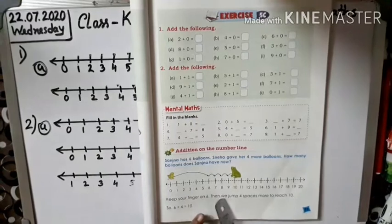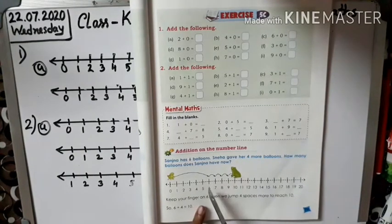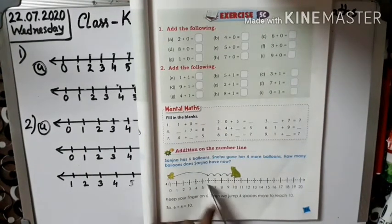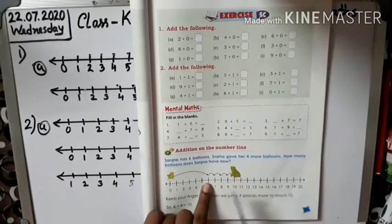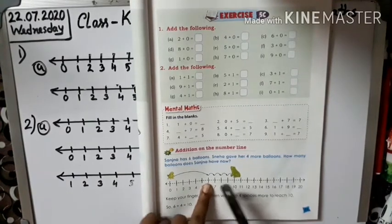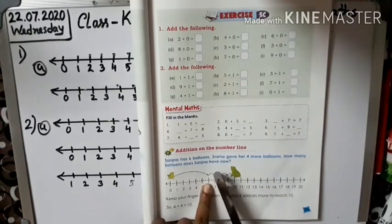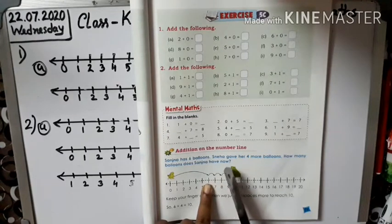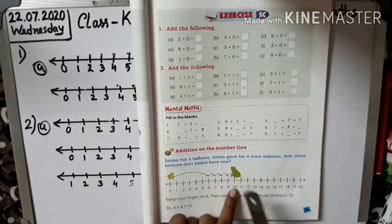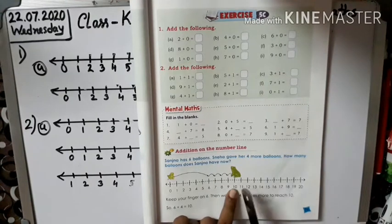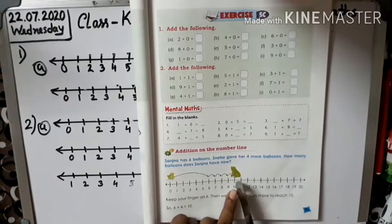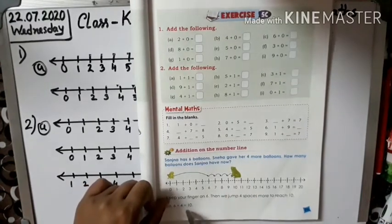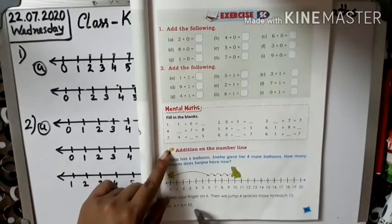Sanjana has 6 balloons. So everyone touch your finger on 6. Okay. Then we jump 4: 7, 8, 9, 10. Yes. Jump 4 to reach number 10. So, 6 plus 4 is equal to 10.